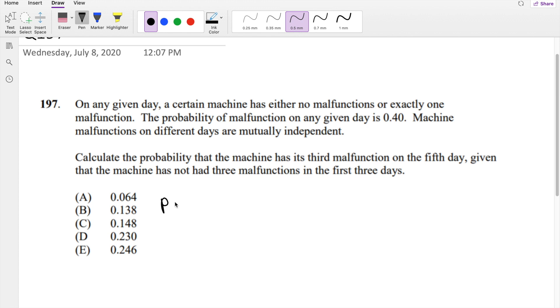The question is asking: calculate the probability the machine had its malfunction in the first day. So this is called A. Given the machine has not had three malfunctions in the first three days, B.